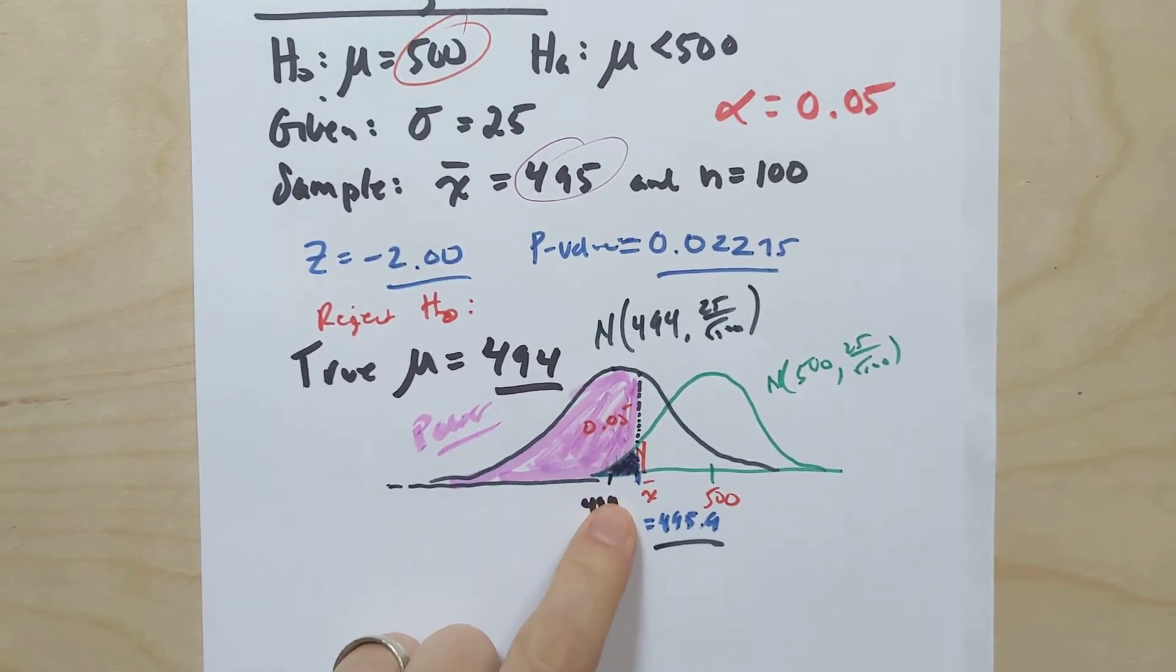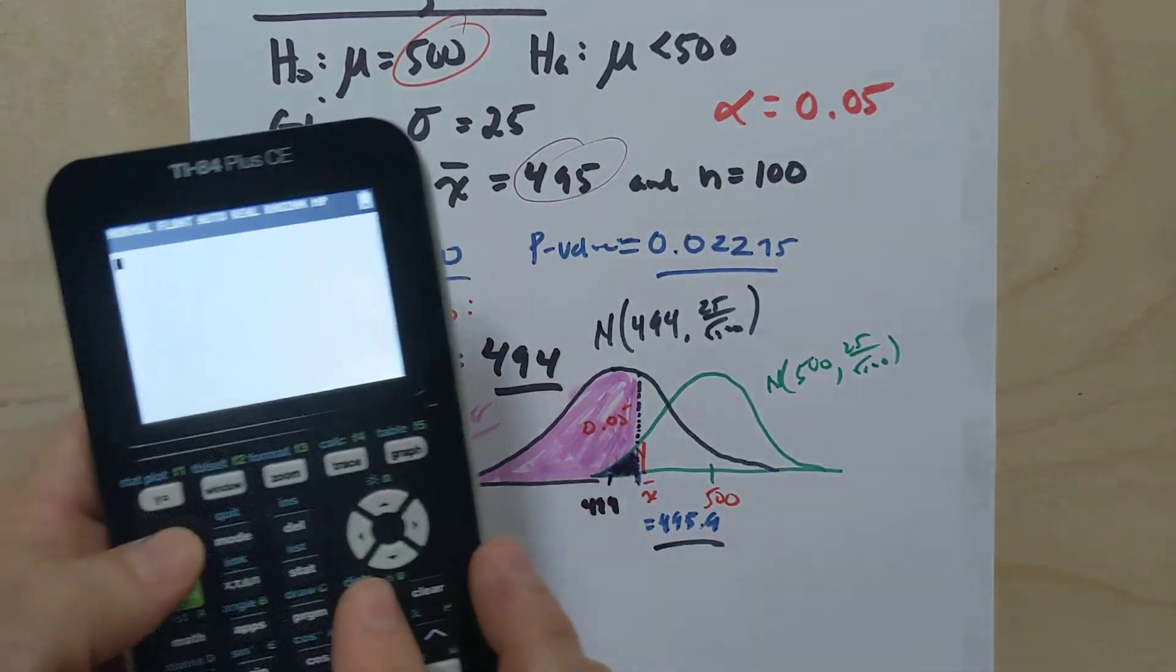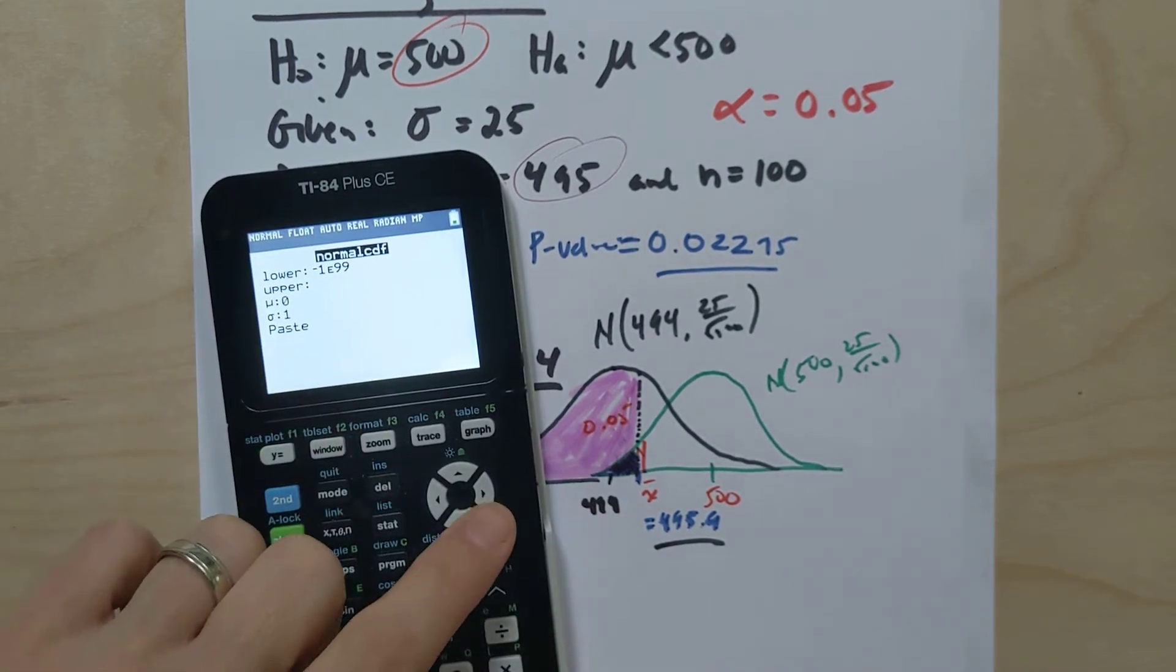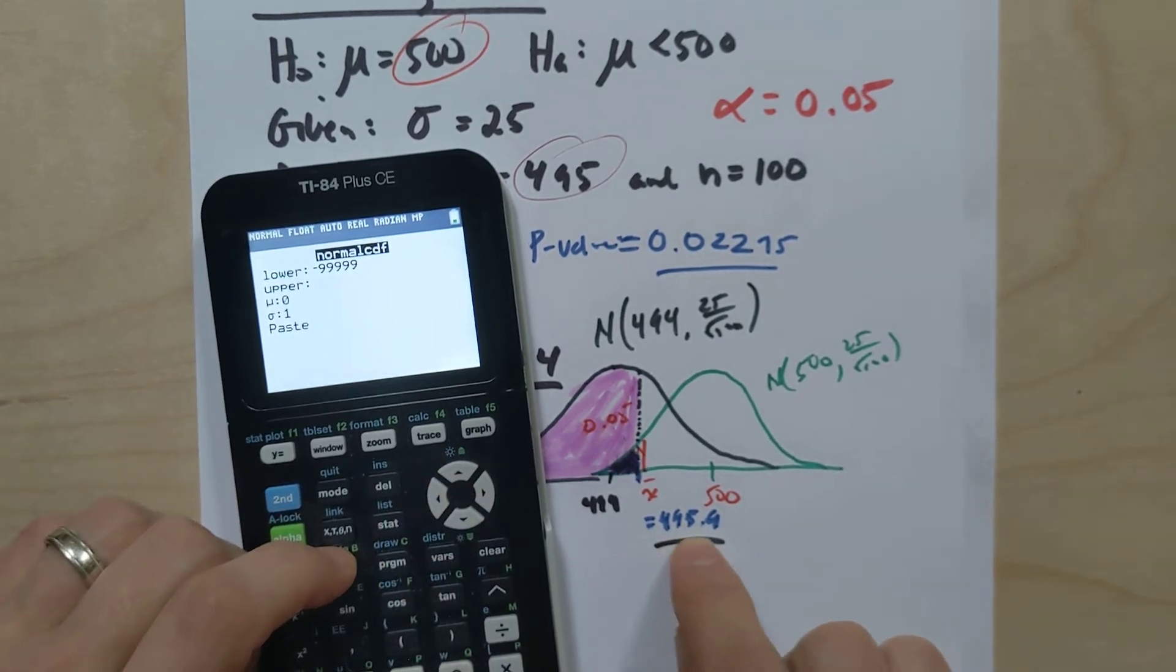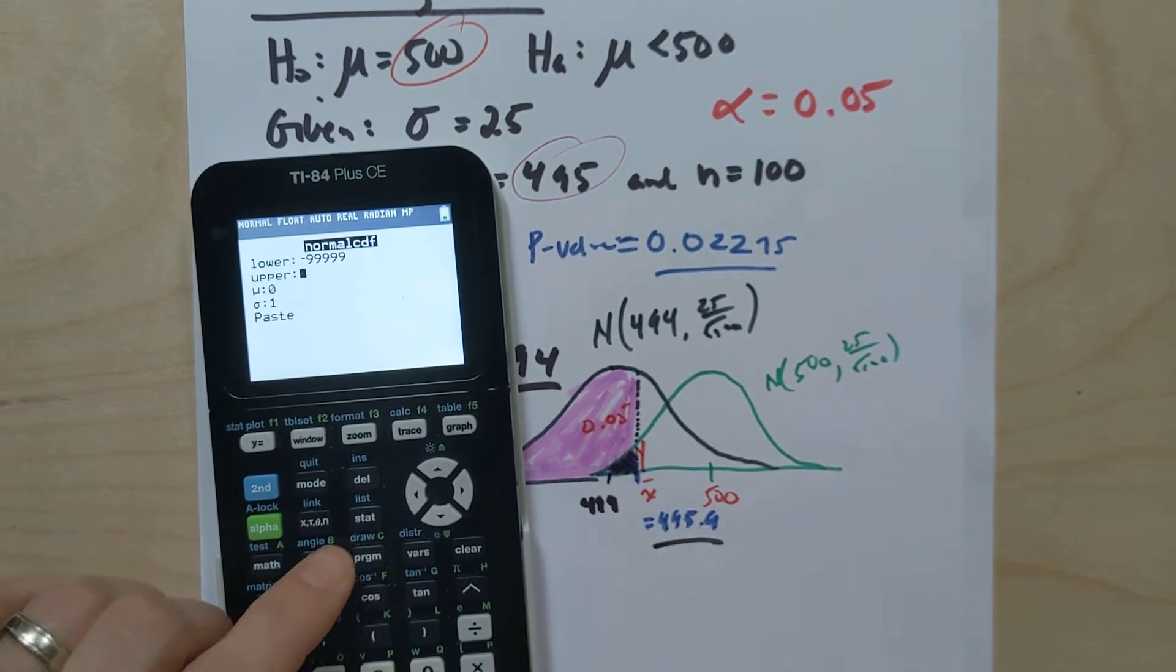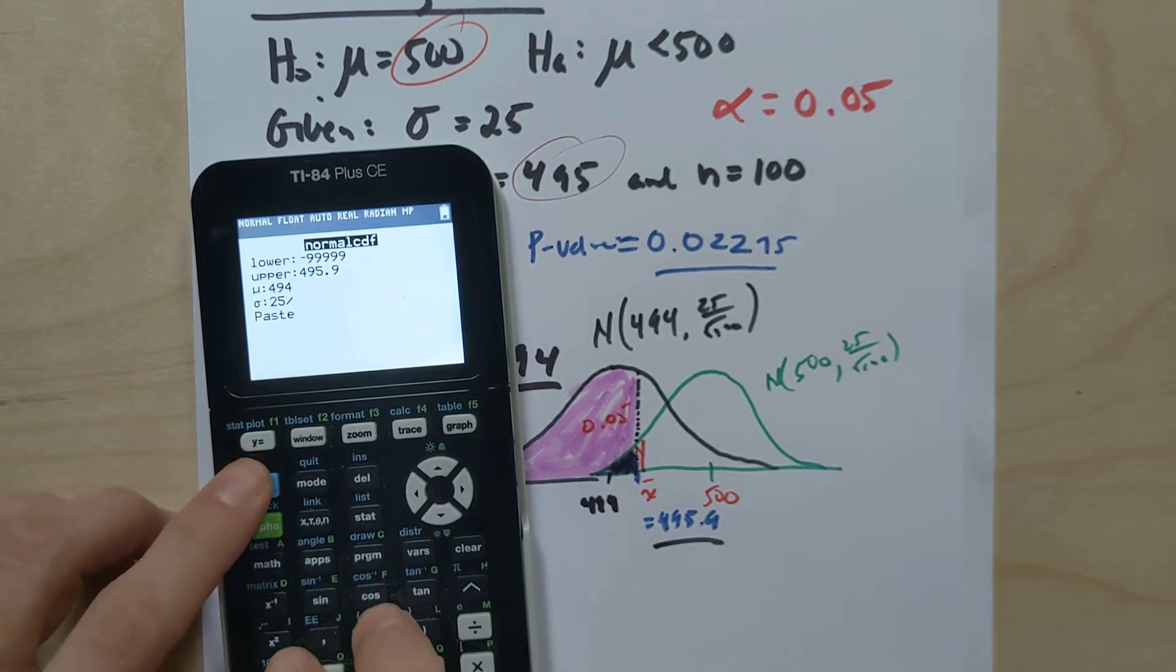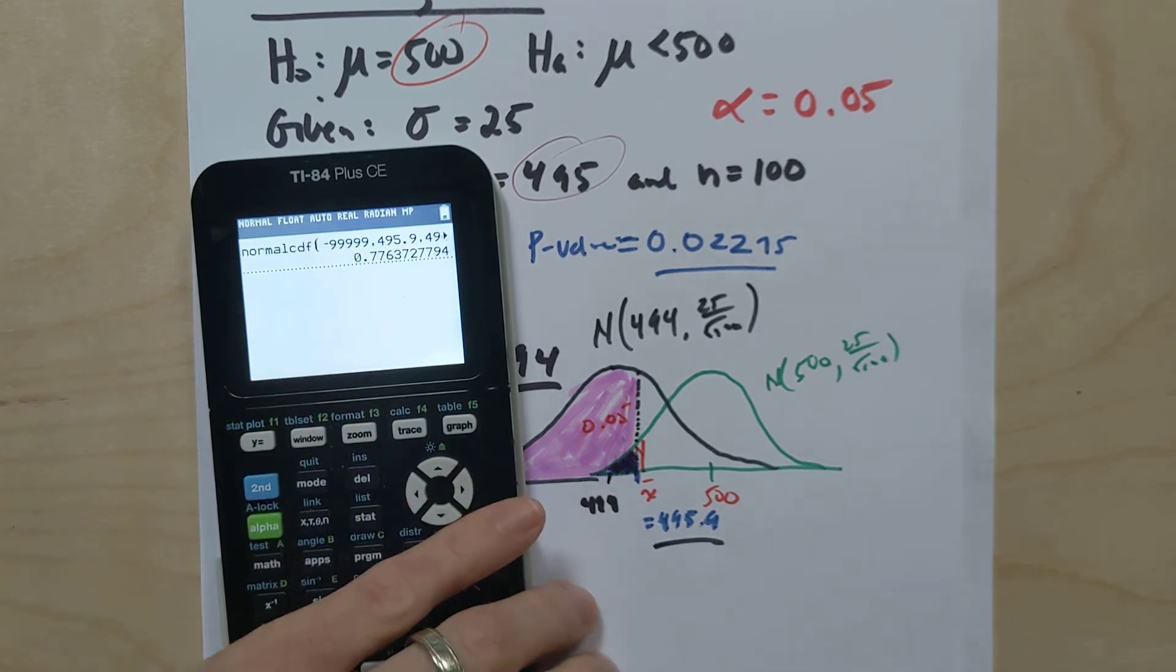So let's calculate that. That's going to be a nice size value. It's going to be over 50%. It's not like super powerful, but relatively powerful. I'm going to go to normal CDF. This is everything to the left. So let's say negative 9999. The upper boundary is going to be the sample mean that acted as the rejection region for me rejecting the null hypothesis. That was approximately 495.9. The μ now is 494. Standard deviation was again, 25 divided by the square root of 100. And let's calculate.